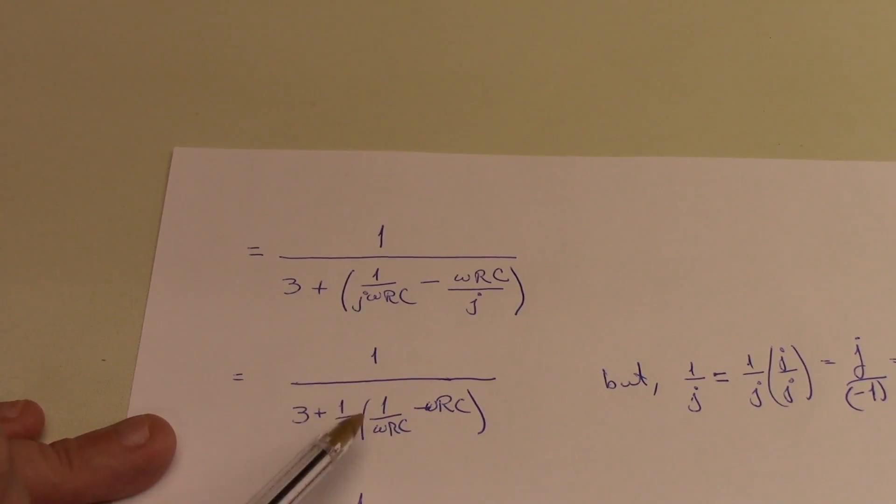So just a couple more steps. I can factor 1 over j outside of all this. So I've got 1 over 3 plus 1 over j times 1 over omega rc minus omega rc.